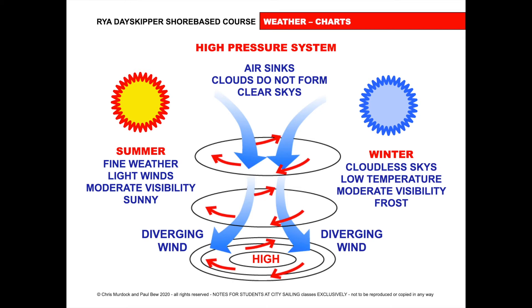In the winter with high pressure we'd get cloudless skies, low temperature, moderate visibility, and frost. The reason is there's no cloud cover — think of cloud like a duvet on your bed. Without a duvet you get cold during the night. So with a high pressure or anti-cyclonic system in winter, there's nothing holding the heat in. The heat escapes from the land and we experience frost. During the day we get a little warmth from the sun, but as soon as it sets we feel cold quickly.